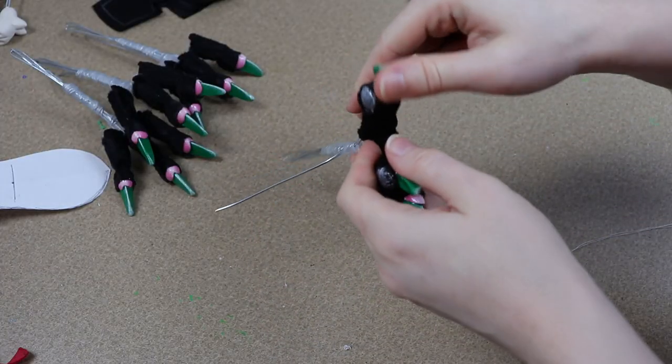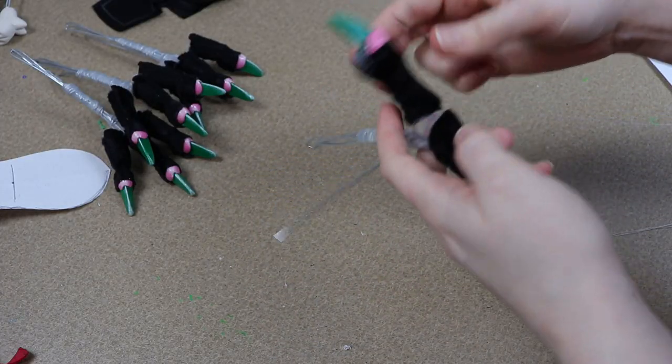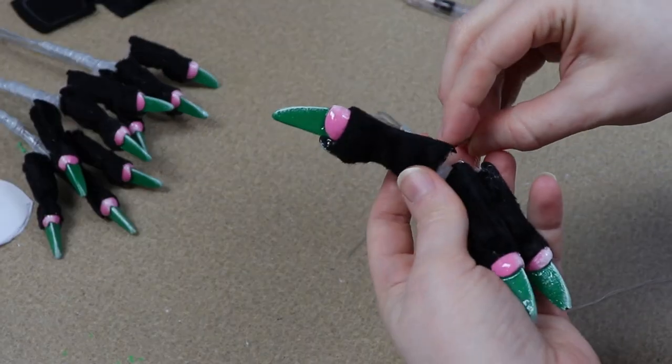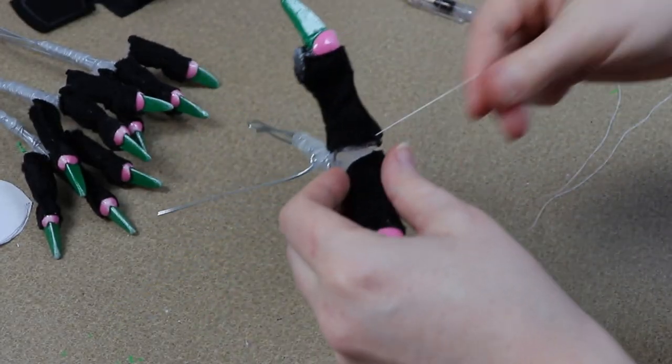Once I have the toes put together, we're then going to start sewing them together. So I'm going to spread my wire frame and in between each toe, we're going to stitch them together.